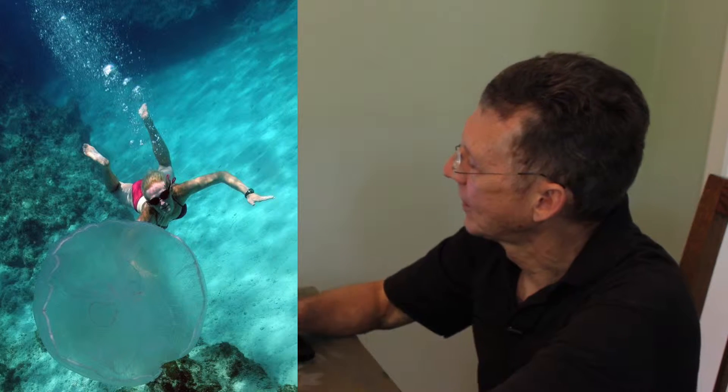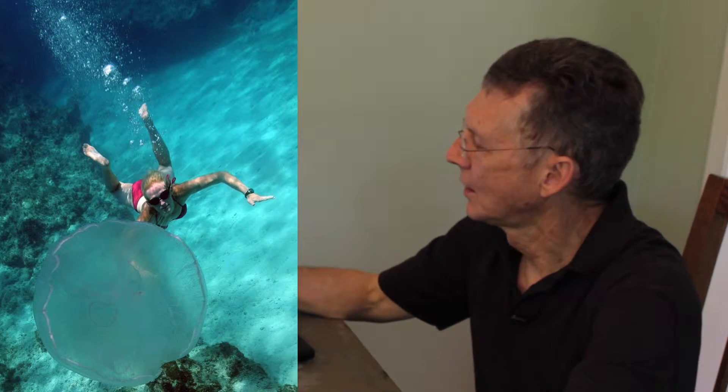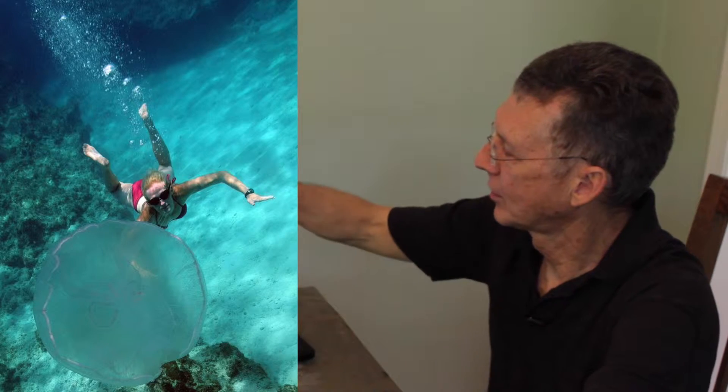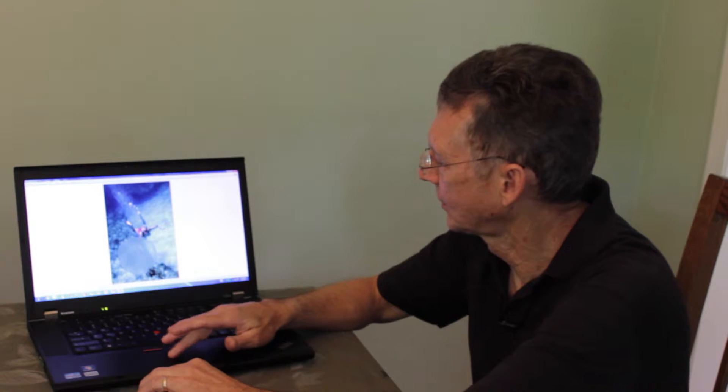Here's another example of my daughter snorkeling at Cayman Islands at the Sunset House. Here's a jellyfish and my daughter below it. Close focus wide angle, everything's clear. It's on a sunlit day, plenty of lighting even with a small aperture.